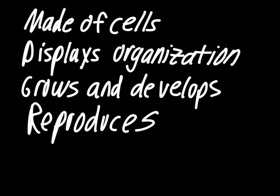To summarize, we've covered the first four characteristics of living things: all living things are made of cells; they display some type of organization, which doesn't have to be as complex as ours; all living things grow and develop within one single lifetime; and all living things reproduce and pass on traits to the next generation. Thank you for watching, and make sure you answer the questions at the end of the video.